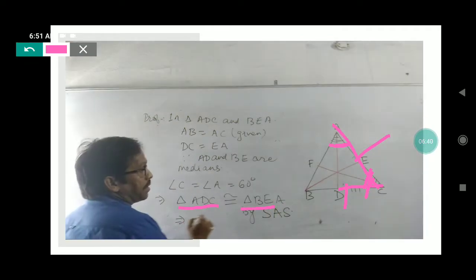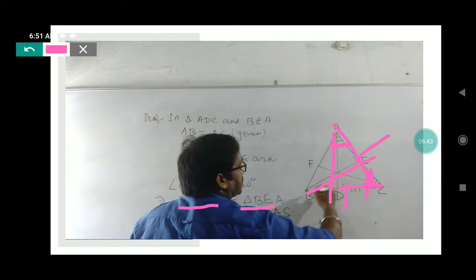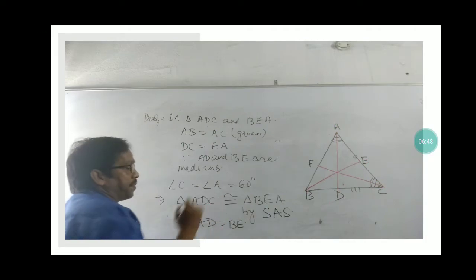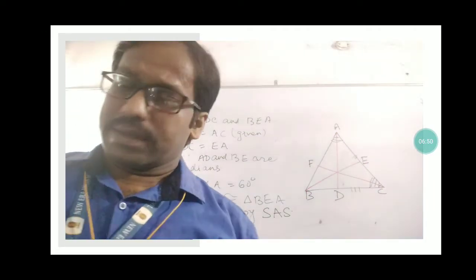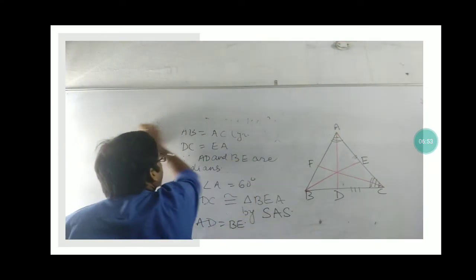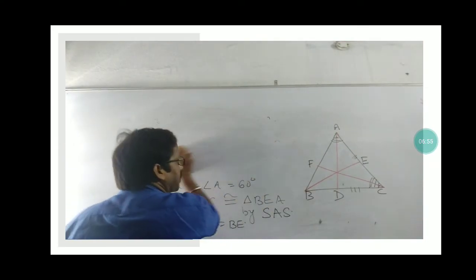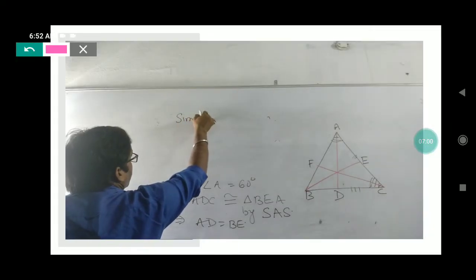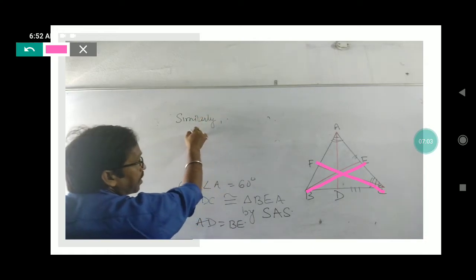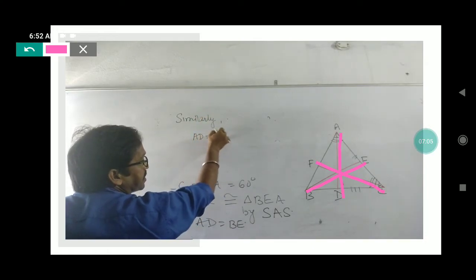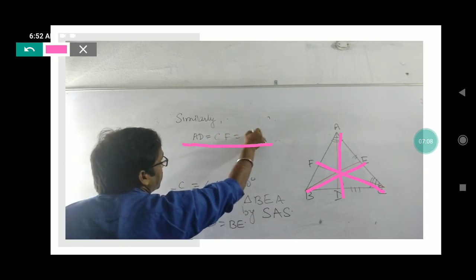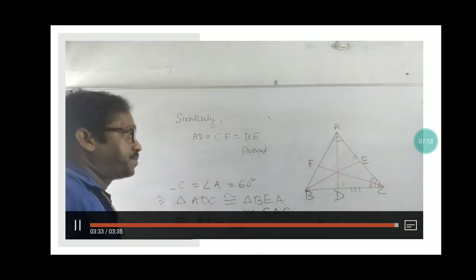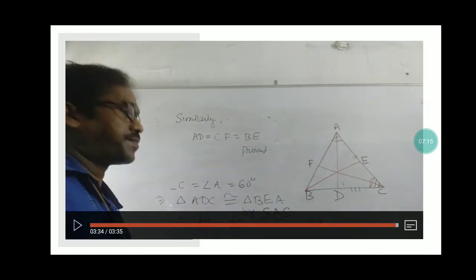So we have proved that the corresponding parts AD equals BE. Similarly, we can say that BE equals CF, and since BE is already equal to AD, all three medians are equal. This is what we had to prove, and we have proved it.